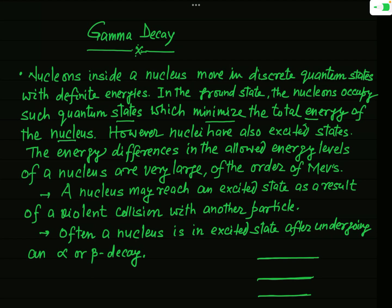Just like an atomic system, nuclei may be found in higher energy states, called excited states. When you want to excite an atom, you supply energy from outside as heat or by striking projectiles. However, the two energy levels of a nucleus are separated very much — the excitation energy of a nucleus is very high compared to the atomic system, on the order of mega electron volts.